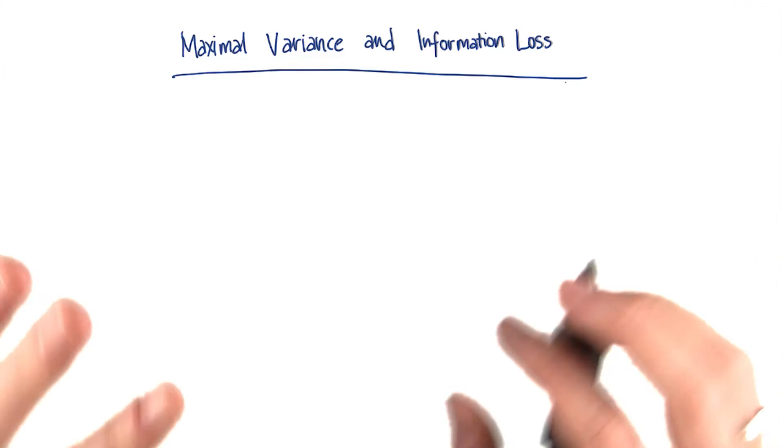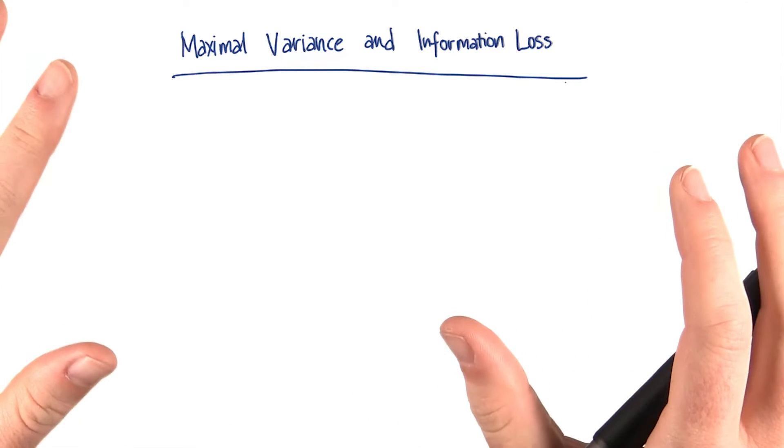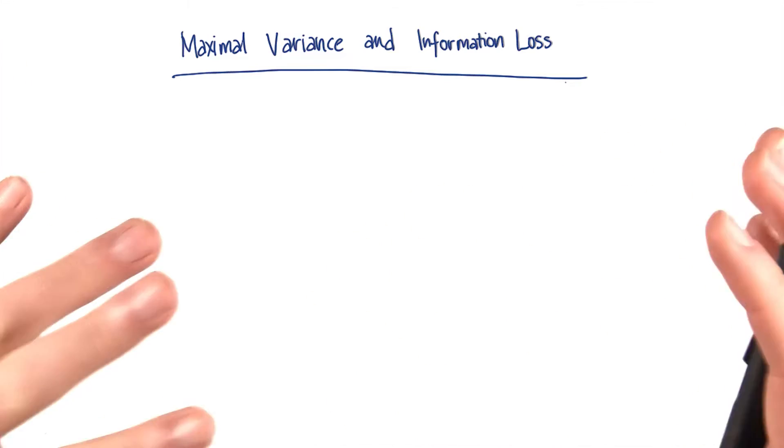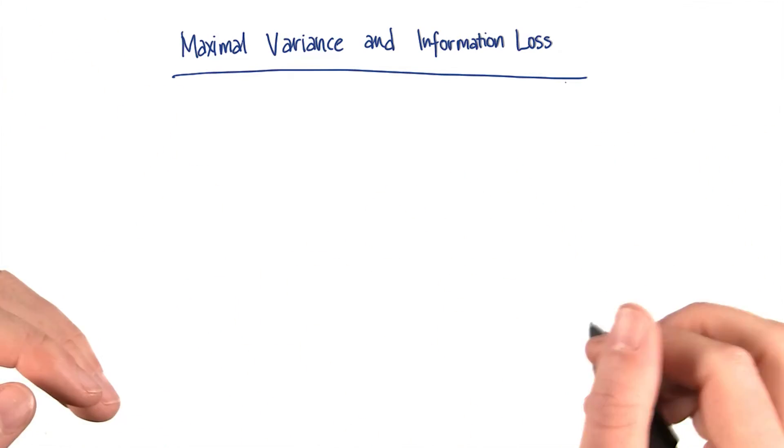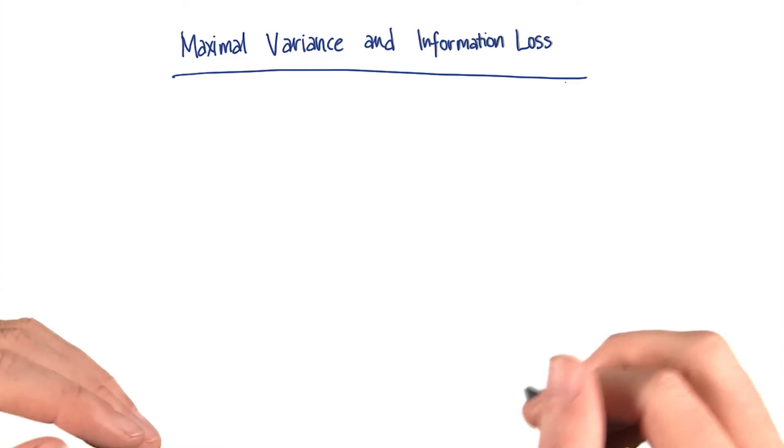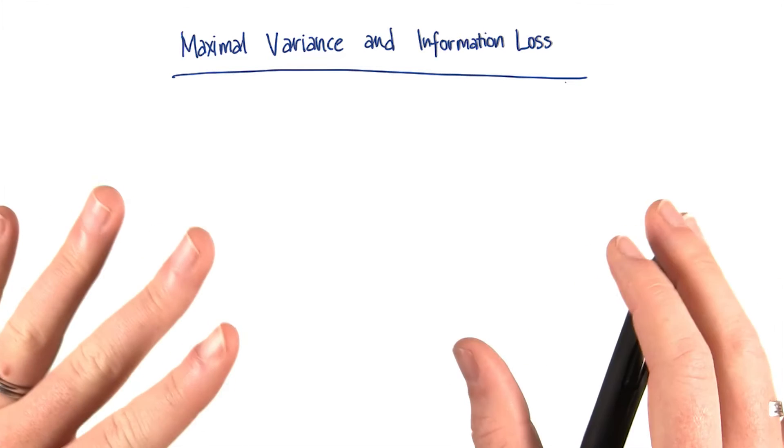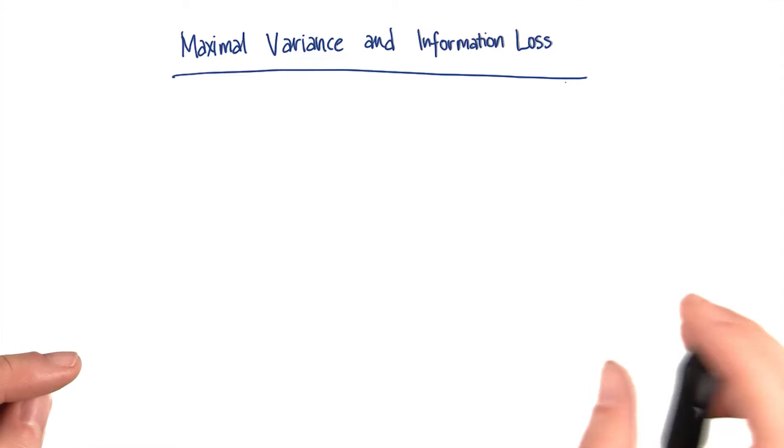It's beyond the scope of this class to show you how to find the direction of maximal variance. It involves some linear algebra, which isn't too difficult, but we're not going to get into here. But if you're willing to believe me that the principal component, the direction of maximal variance, can be found, I can justify to you that it's the direction that minimizes the information loss.